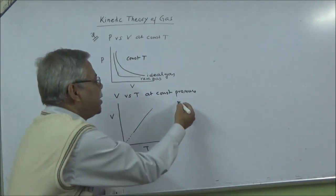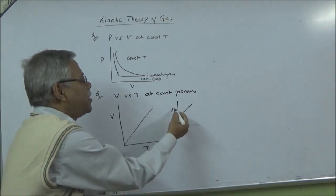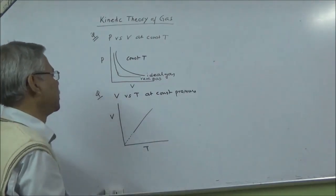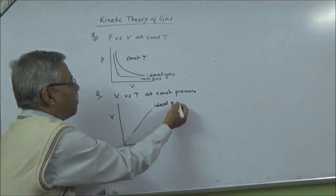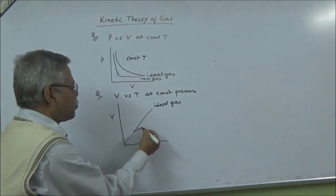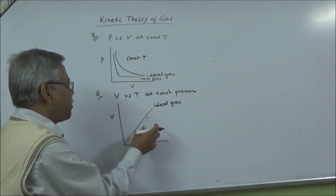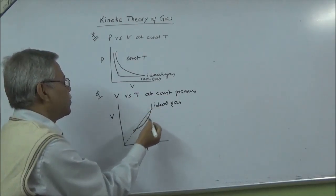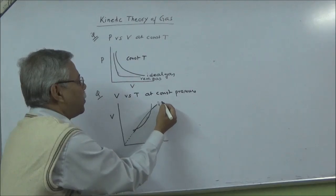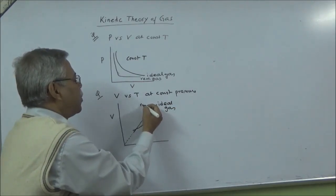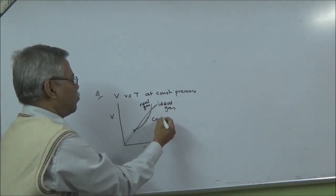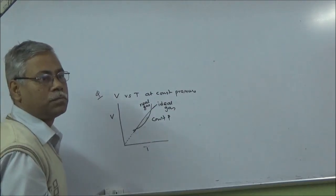If a graph is shown that does not pass through the origin, then V is not proportional to T for that graph. This straight-line-through-origin graph is for ideal gas. For a real gas there is deviation from this behavior, at constant pressure.